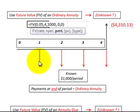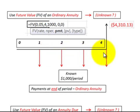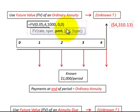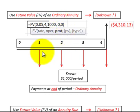Here we'll look at the future value of an ordinary annuity. An ordinary annuity is where we receive equal payments at the end of each period or year — known amounts we're discounting forward to determine their future value at the end of the fourth year. Using the future value function in Excel, we put in the interest rate, number of periods, the payment amount, no present value, and type zero — which tells the equation that payments are received at the end of each period. Solving for that, we come up with $4,310.